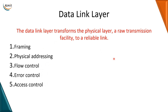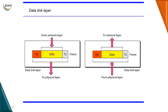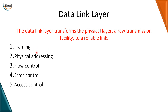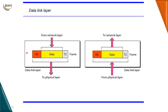Framing is grouping the bits coming from the physical layer into manageable data units. You can see that data coming from the physical layer is being encapsulated into a frame. The second responsibility is physical addressing: when transmitting frames from one device to another, we need the physical addresses of the devices. The source and destination physical addresses are stored in the header of a frame.